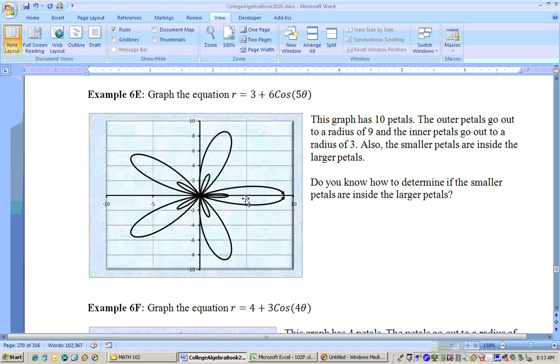Also, the number of petals is 10. 6 plus 3 is 9. That's how far out the radius went. And 6 minus 3 is 3, and that's how far the smaller radius went. So that's the look of what those graphs look like.